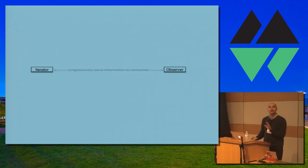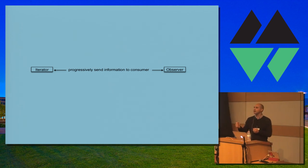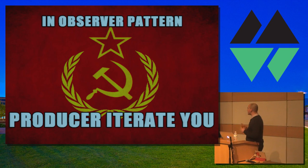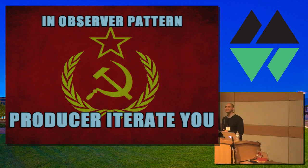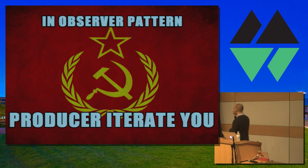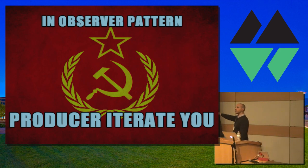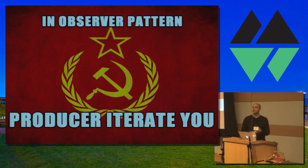One thing that the guys behind Design Patterns missed is the innate correspondence between these two patterns. They're both about a data producer progressively giving information to a consumer one item at a time. The only real difference is that in the observer pattern, the producer iterates you — you give it a callback and it keeps calling that callback and pumping data at you. In the iterator pattern, the design patterns guys gave a way for the producer to say 'no more data,' but in pub/sub, event emitter, and DOM events, there's no way for the producer to say there's no more data.